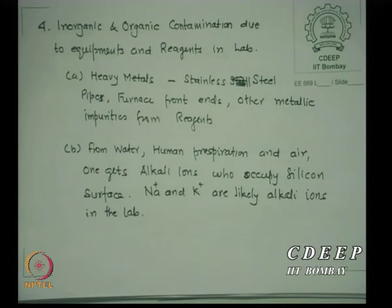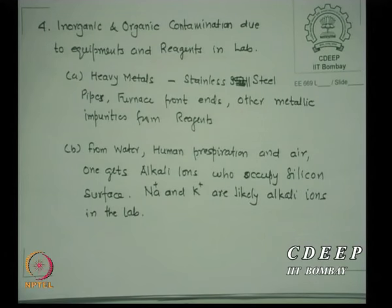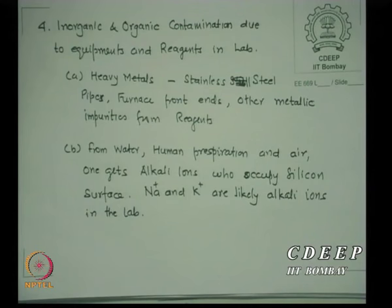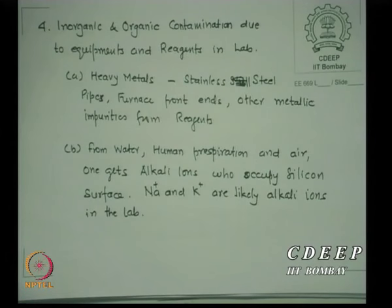There are two kinds of contaminants mostly seen in equipment and reagents: either inorganic or organic. There are heavy metals — we use stainless steel everywhere because it is the best possible material that does not give much particle contamination, but it does give some contamination which is oxides. Then there are pipes, furnace front ends, and other metallic impurities present in reagents — all create some metals inside your solutions or furnaces. These can sometimes actually kill your device performance.